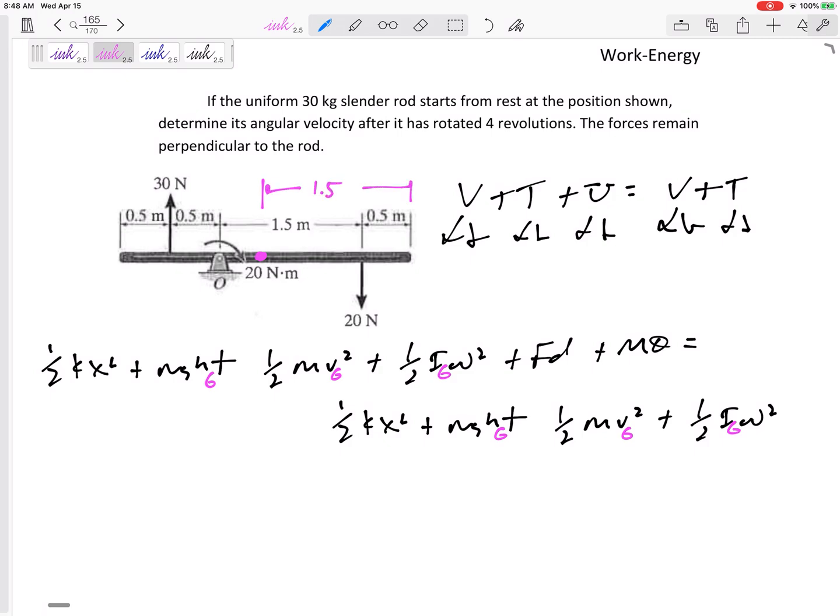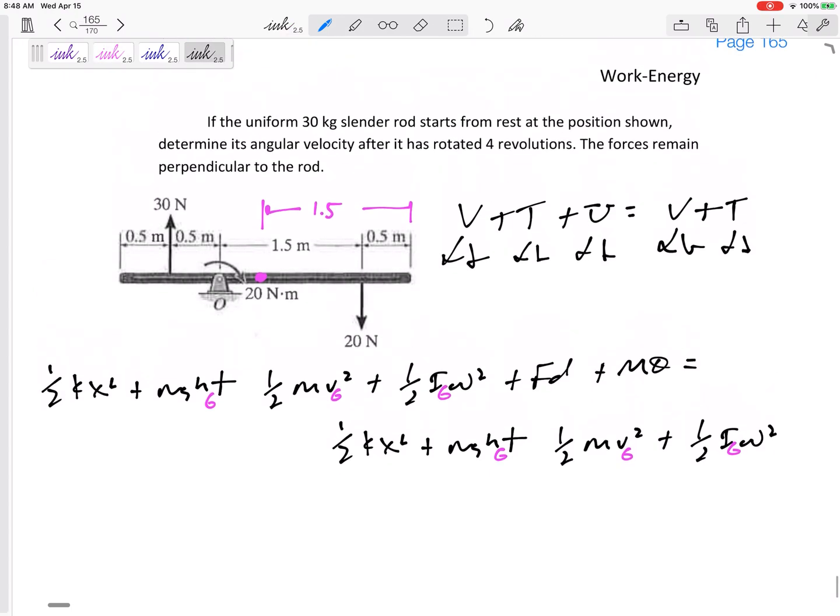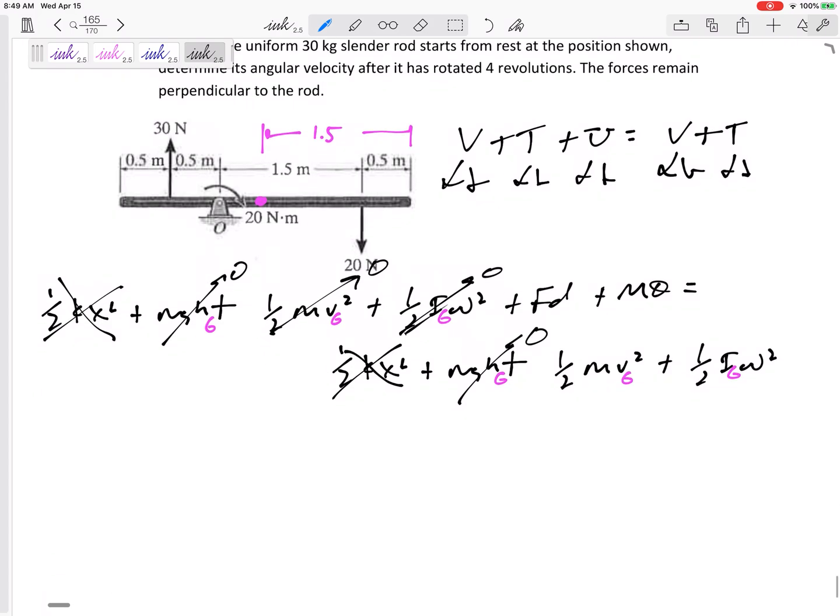I think we're ready. It starts from rest, good, so both of these are zero. Let's think about the height of point G. If it starts here, after it has rotated a full four revolutions, it is back in the same position that it started, so G is back at that same height. We could call that zero right there. There's no spring. This really simplifies down.